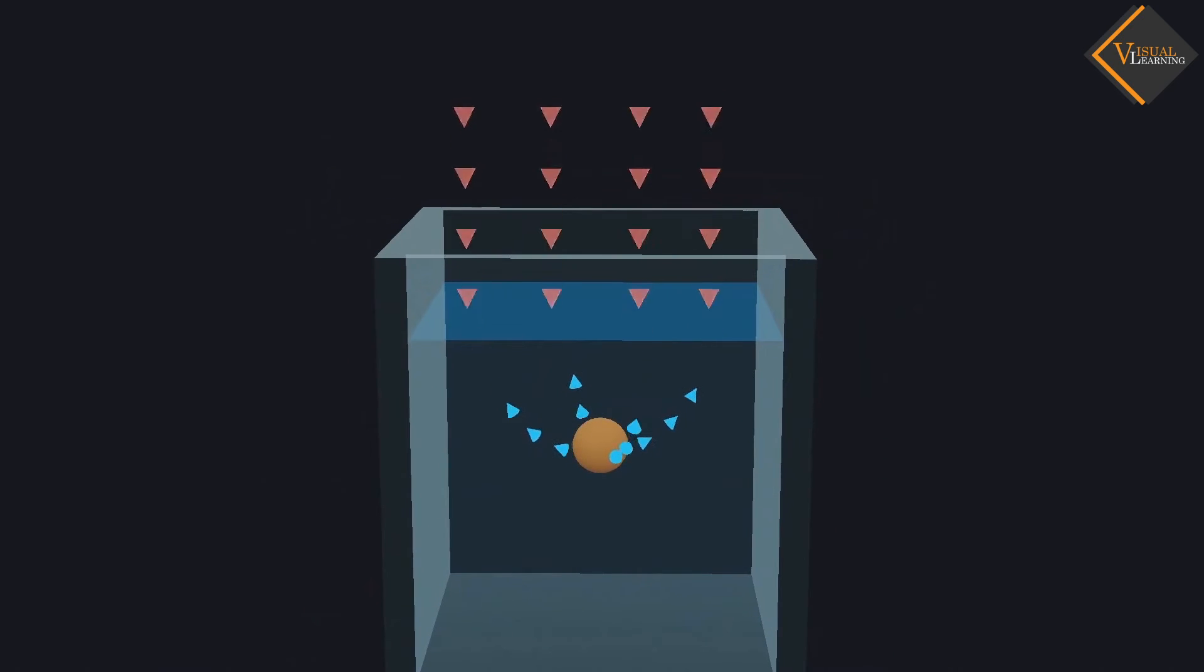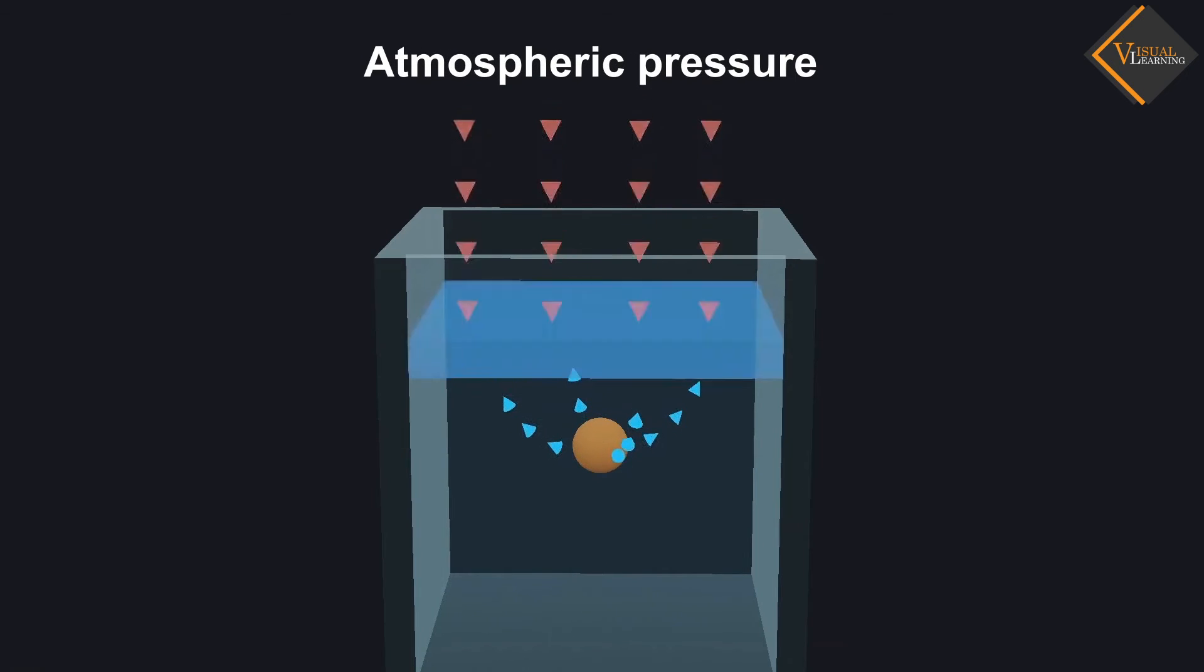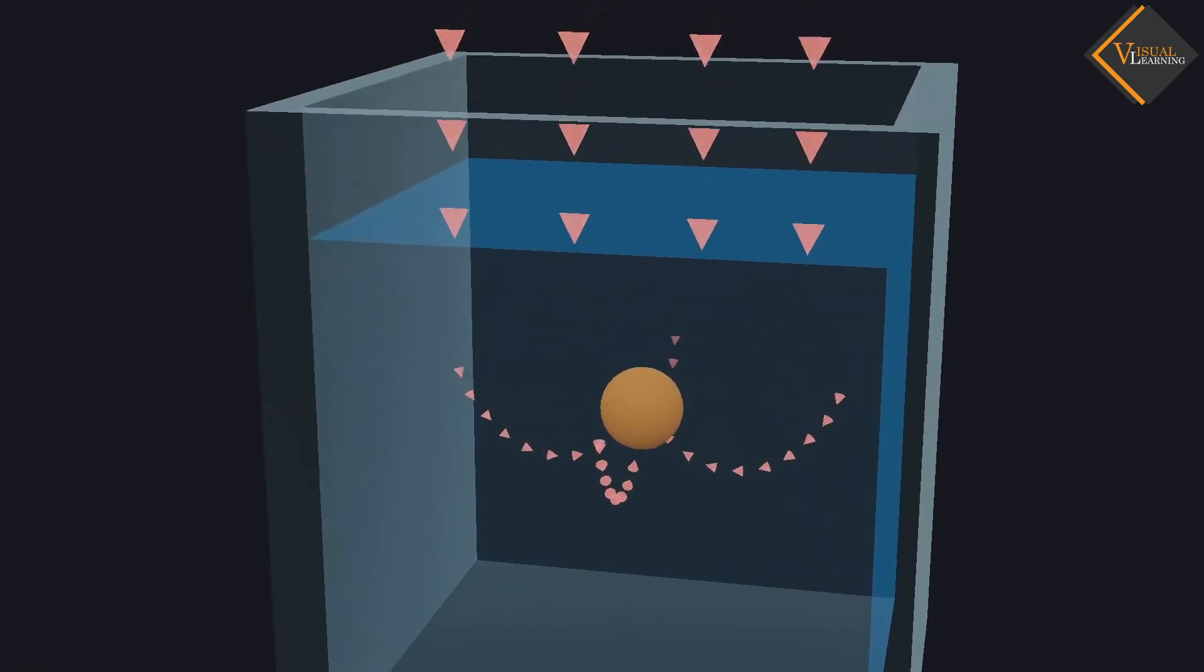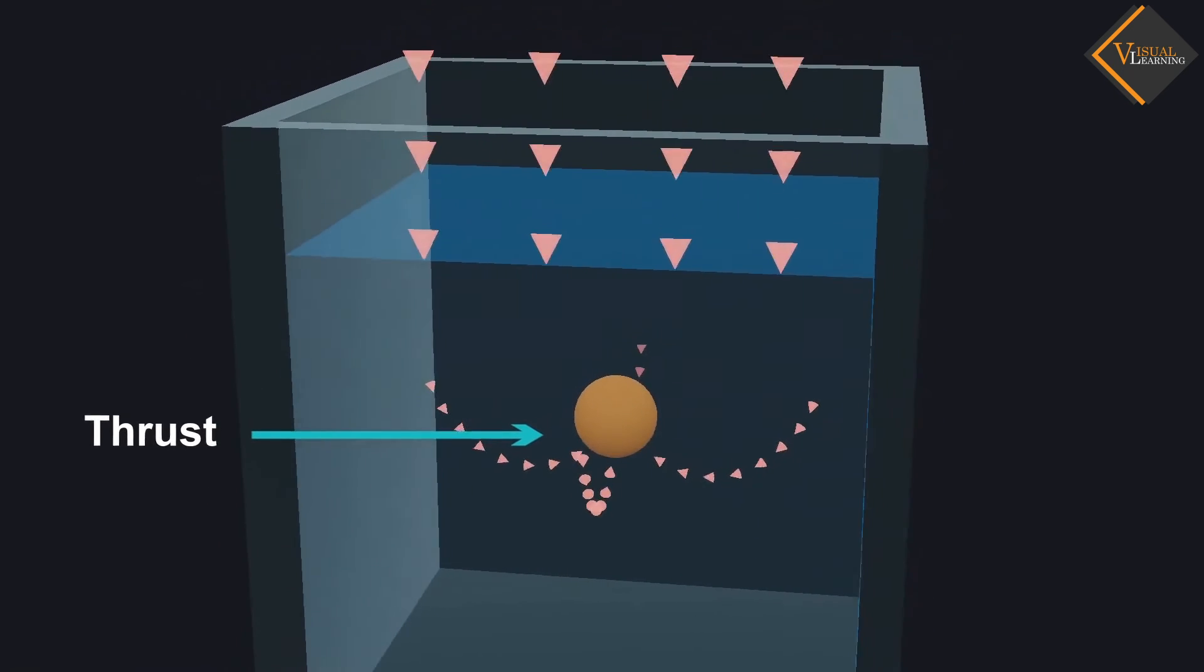On the surface of the water, atmospheric pressure is acting. Because of that, water tries to come back to its own position, and this creates an upward thrust on the plastic ball.